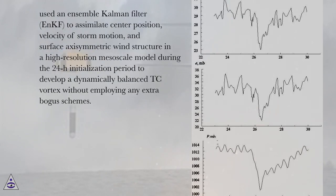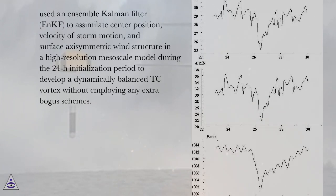An ensemble Kalman filter (NKF) was used to assimilate center position, velocity of storm motion, and surface axisymmetric wind structure in a high-resolution mesoscale model during the 24-hour initialization period to develop a dynamically balanced TC vortex without employing any extra bogus schemes.